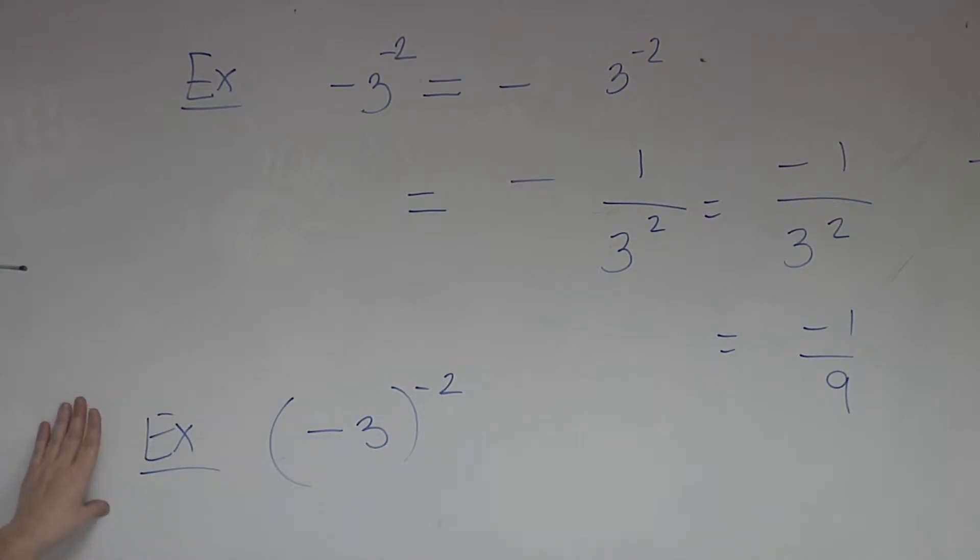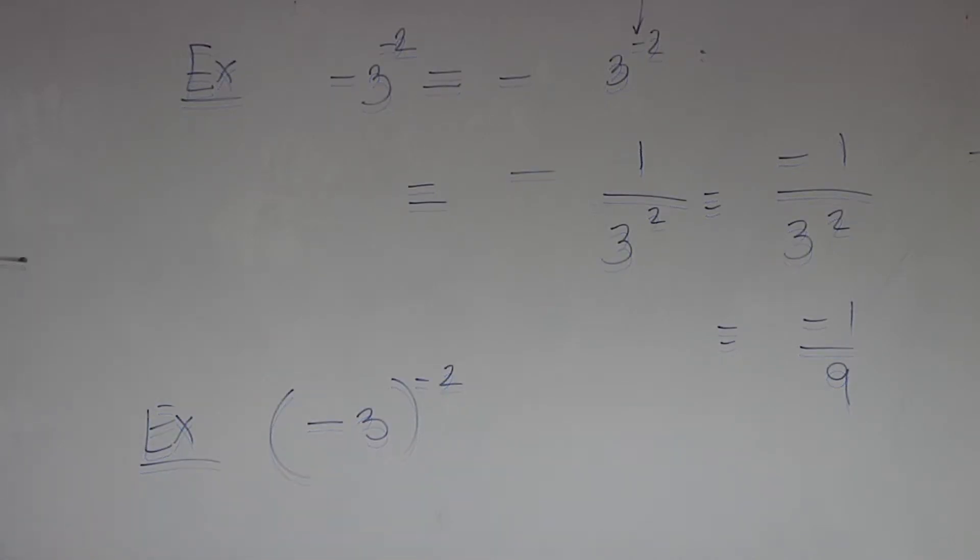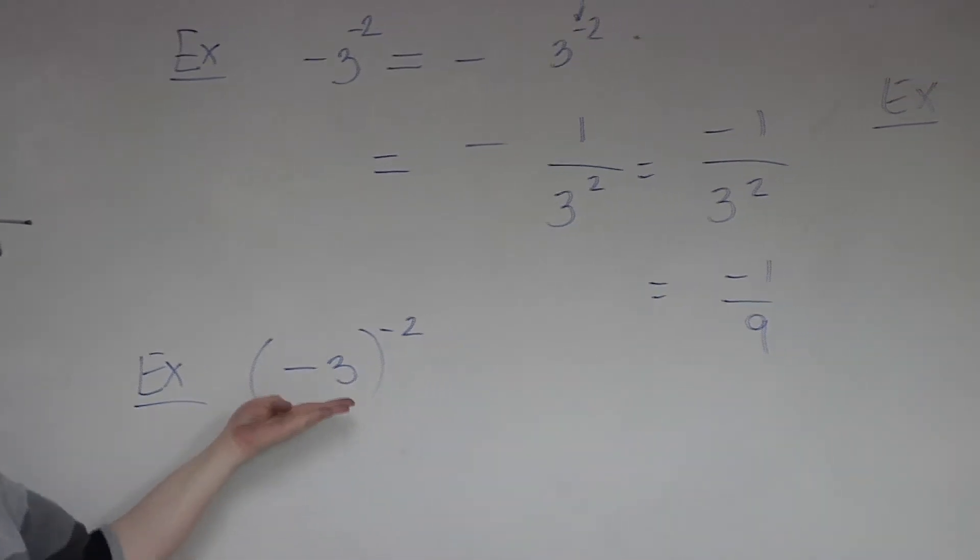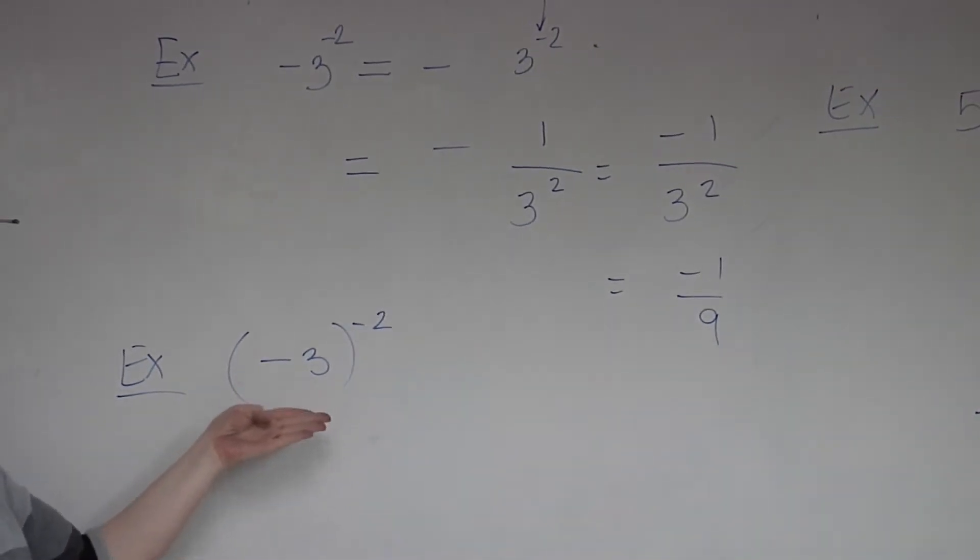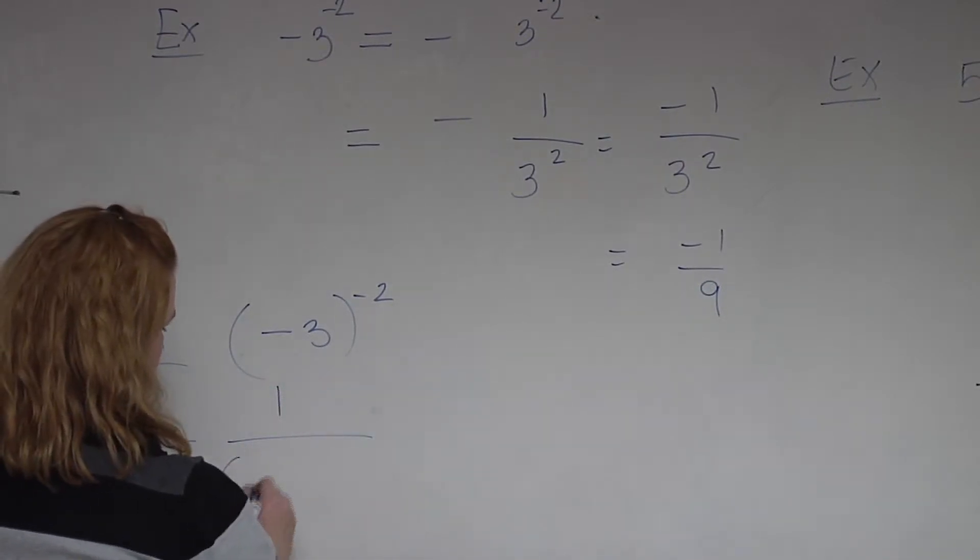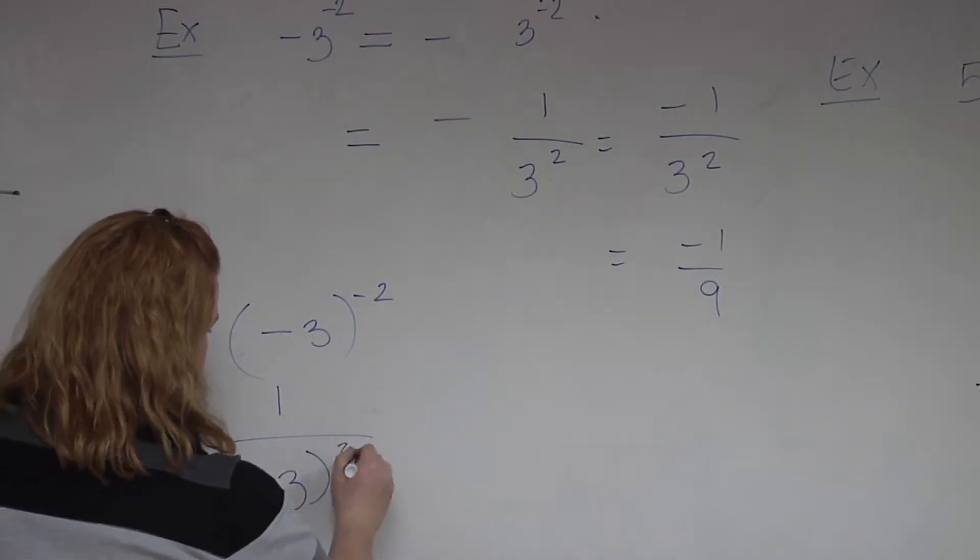So if I jump down to this example to do a comparison, the first thing to the left of that negative 2 is the parentheses. So everything inside that parentheses is affected by that negative 2. So on this one, we've got the power to the negative. What is going to move is not just the 3, but the negative 3.